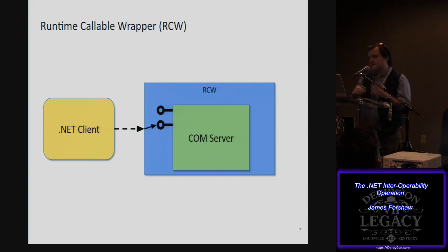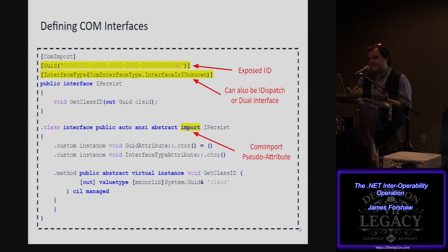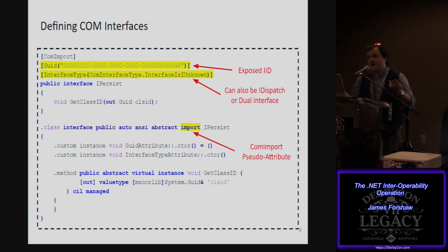To actually talk to this COM object, there are no interfaces directly implemented on the RCW itself. Instead, you need a .NET interface to talk to it. For example, an iPersist interface, which is a fairly standard COM interface. You define a GUID — this time it's the interface ID — and you specify that iPersist is derived from the IUnknown interface, annotating it with the interface type attribute.